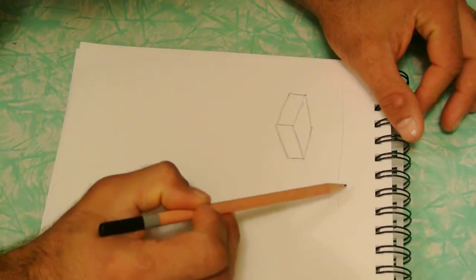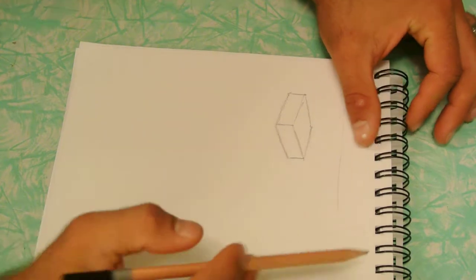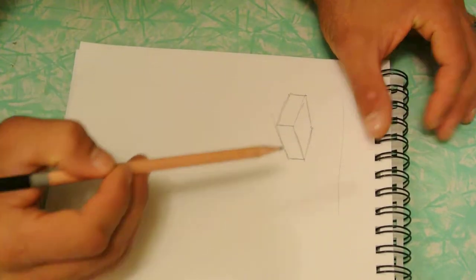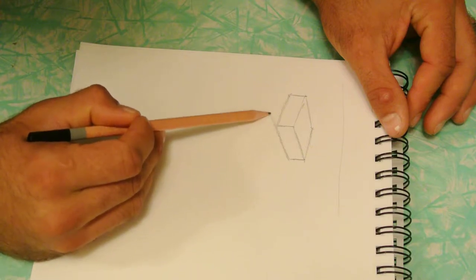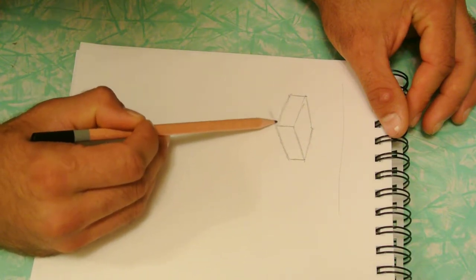Next, you're going to establish your light source. So your light is coming from over here. Now, to make it look correct, follow these lines. Your shadow should be going the same way.